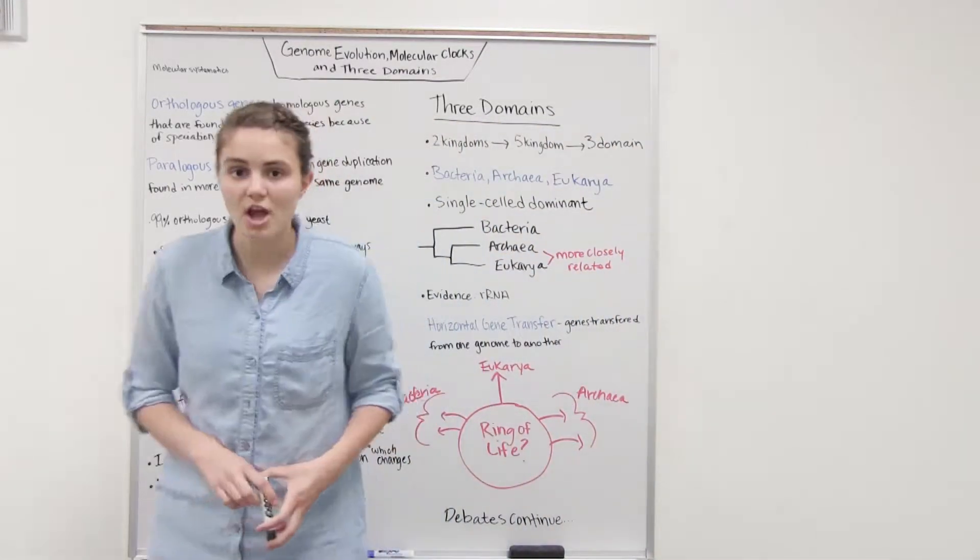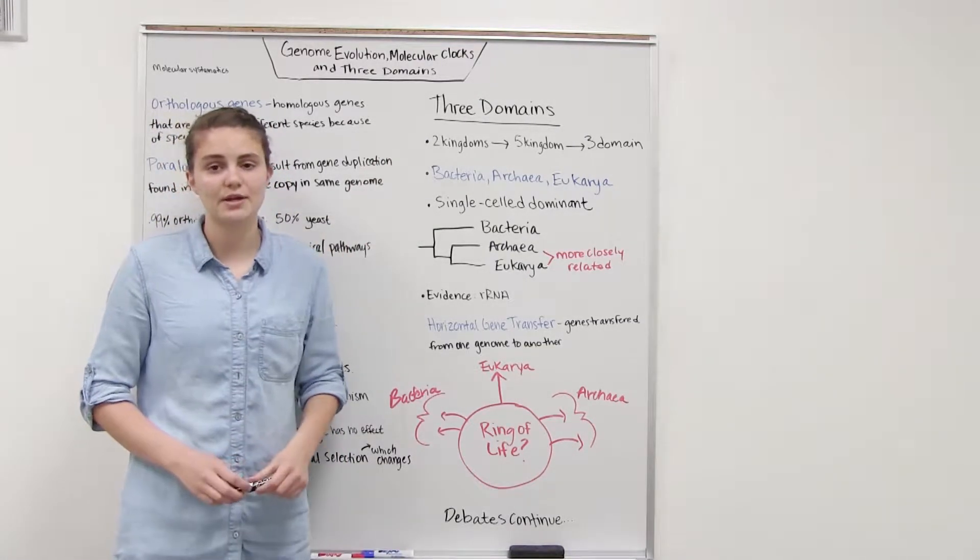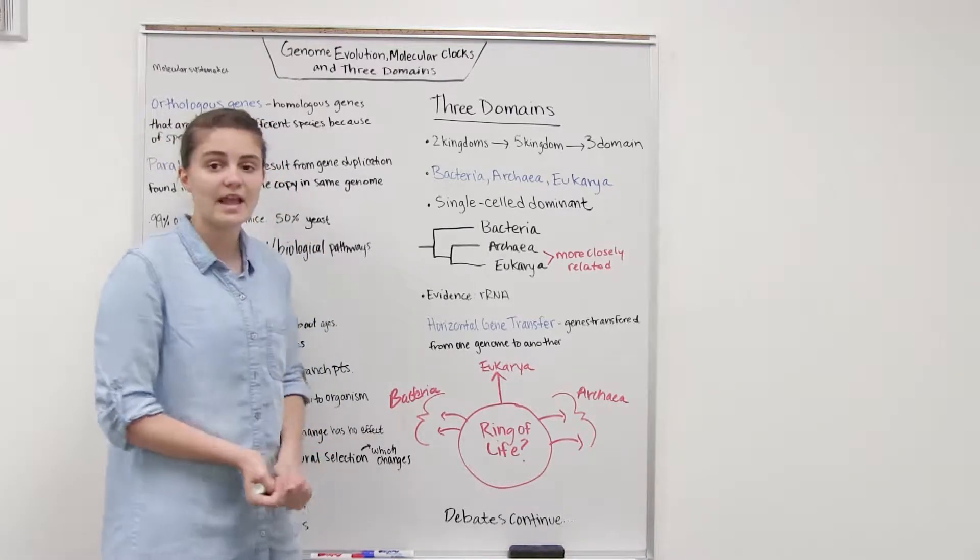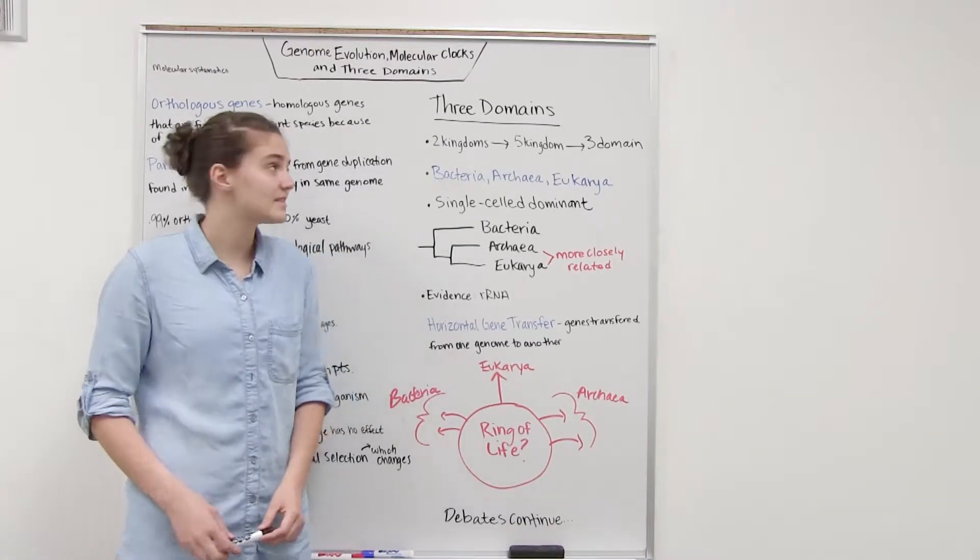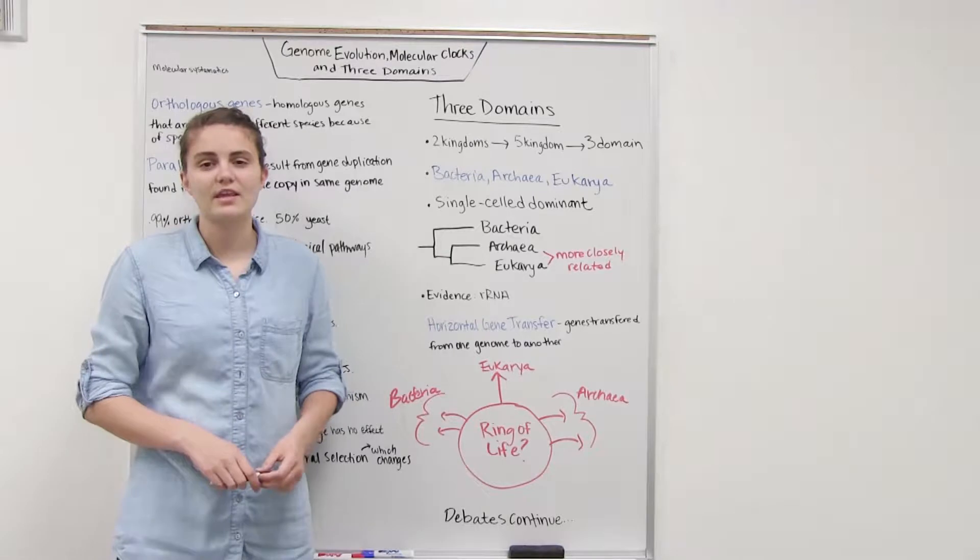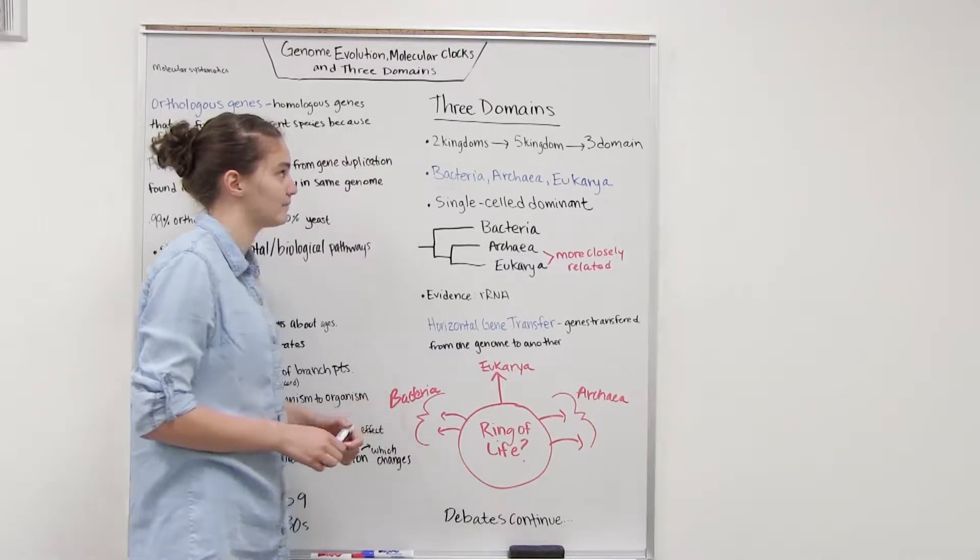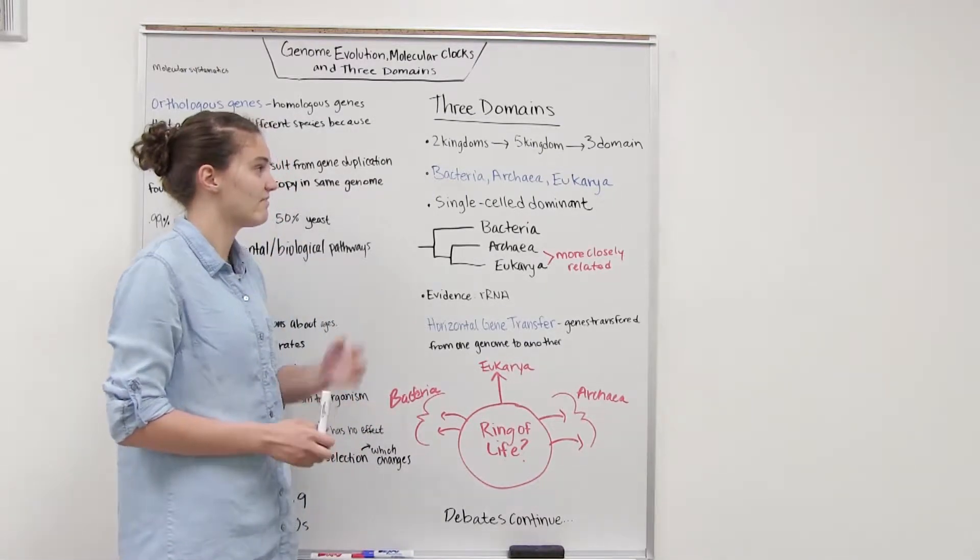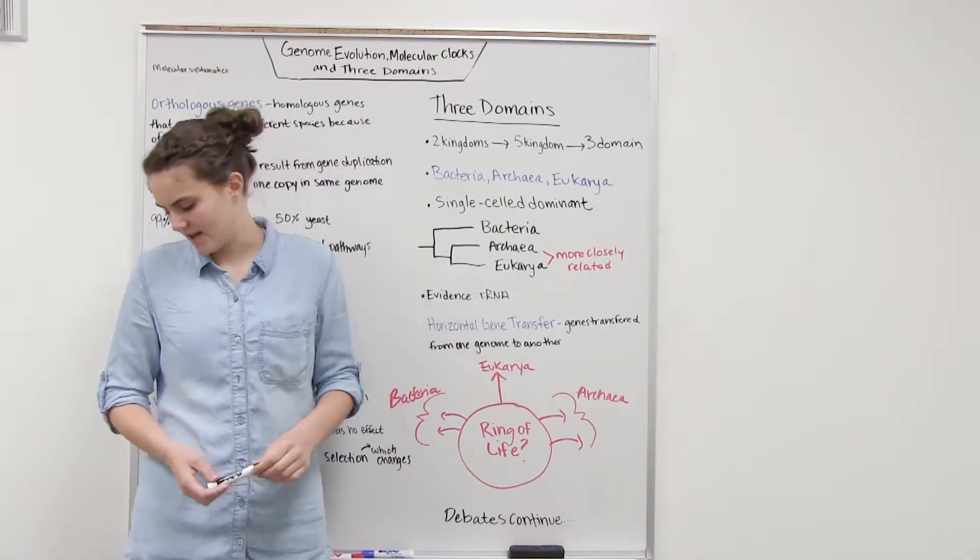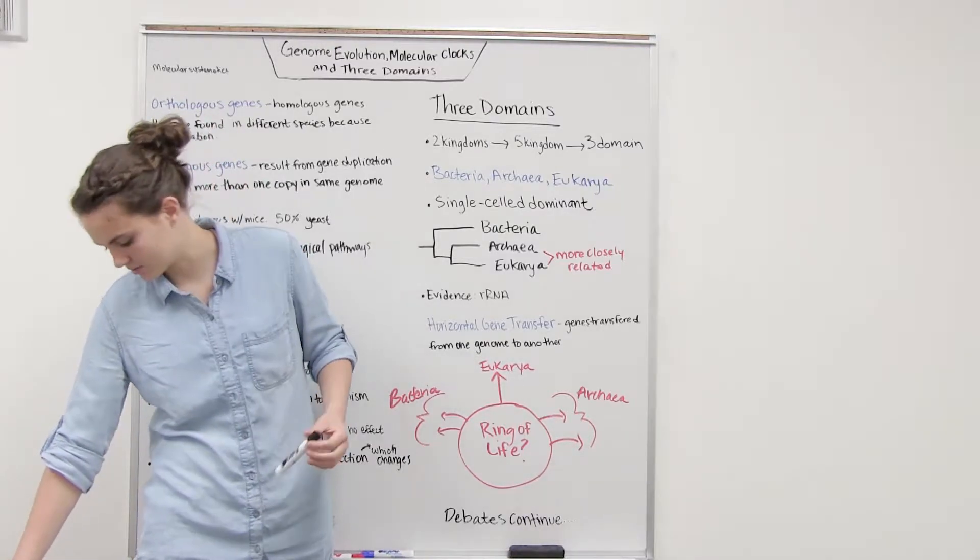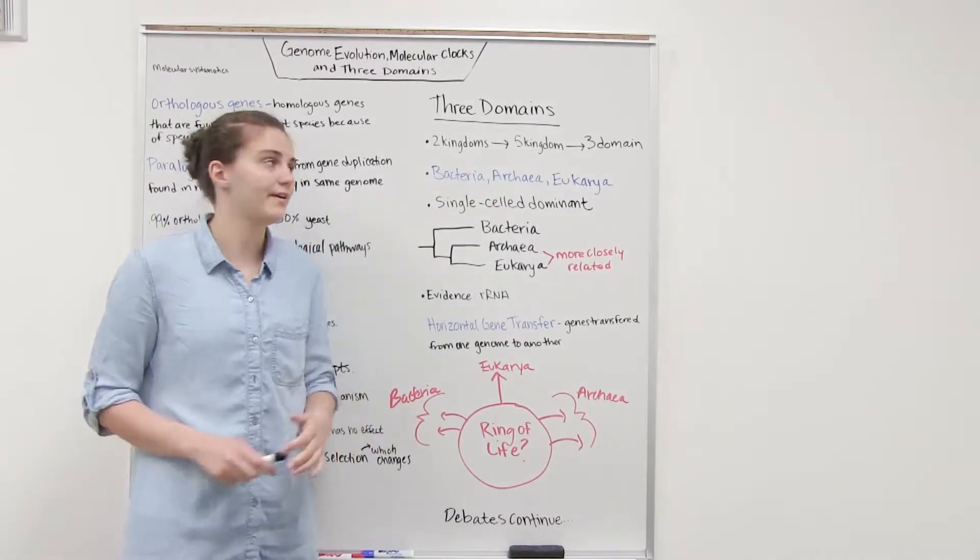The last thing we're going to talk about is the three domains of life. Early scientists classified organisms into two kingdoms, plant and animal. They put a lot of fungi and some of our protists in the plant kingdom and a lot of the other unicellular organisms that could digest some sort of food they put in the animal kingdom. However, over time they decided that they needed to create five kingdoms. They included protist, fungi, animal, plant, and the last one was called monera, which was the prokaryotic kingdom.